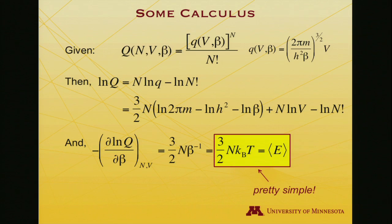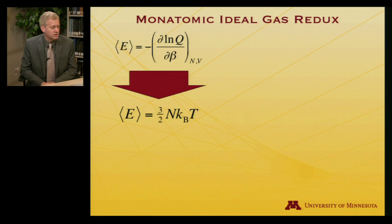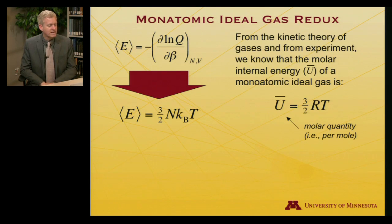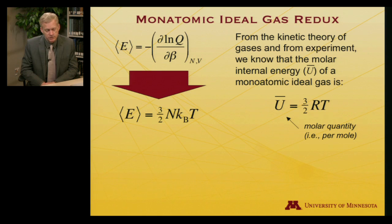That's delightfully simple. Just to recapitulate: we've got the expectation value of the energy, 3 halves NkT. From experiment in the early days of measuring gases, from the kinetic theory of gases, we know that the molar internal energy of a monatomic ideal gas is 3 halves RT. Many of you may remember that from beginning physical chemistry: there's a half an RT associated with translational motion in each of the three directions. So 3 halves RT, and that's a molar quantity.